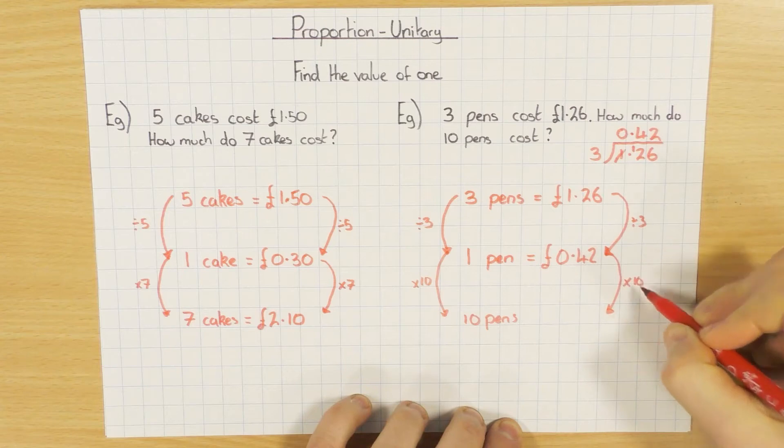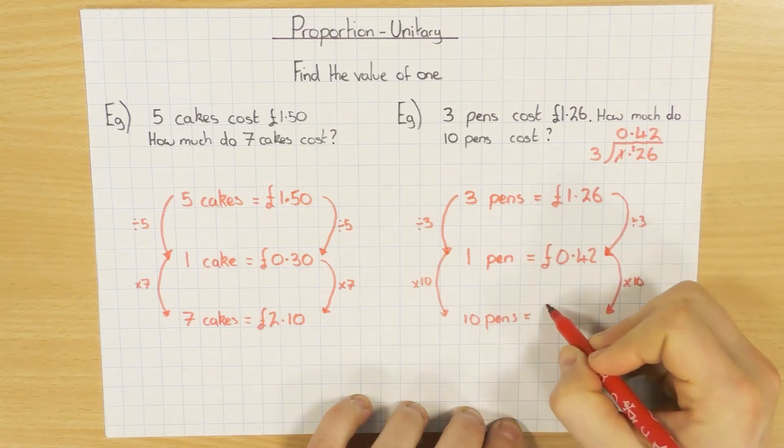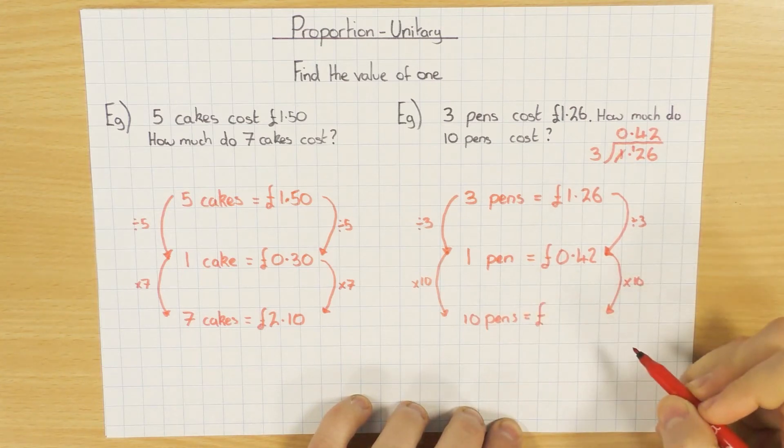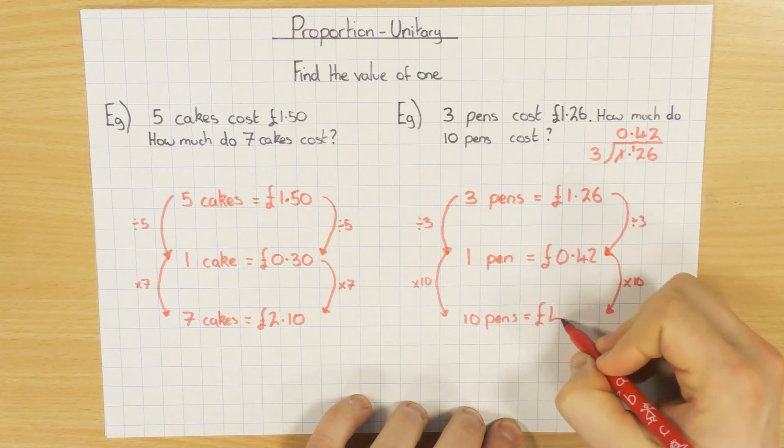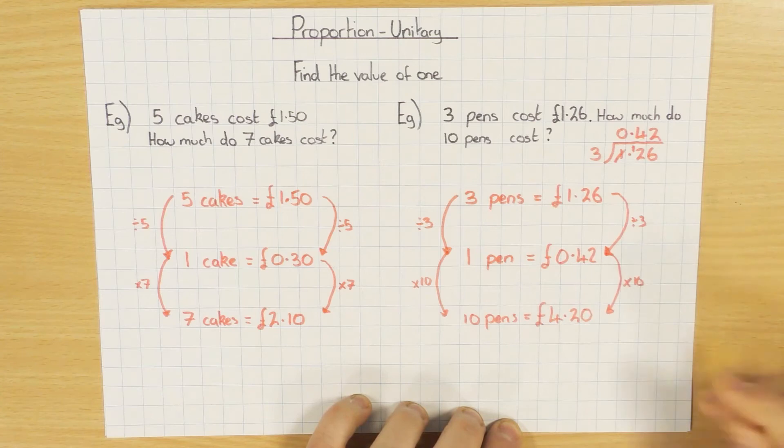And obviously do the same thing on this side. So 42p times 10. Just move the old decimal place. So £4.20. Don't forget to put that second decimal place.